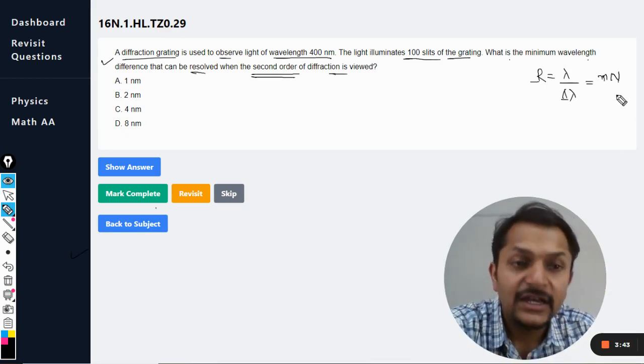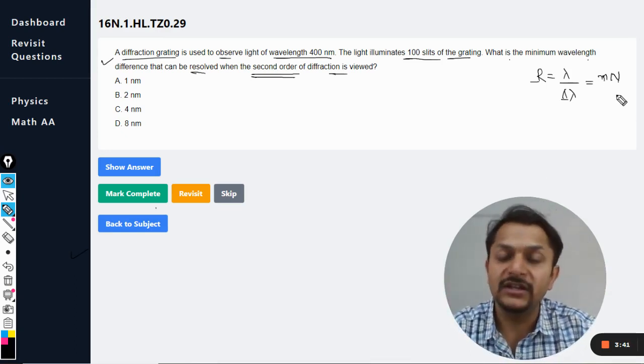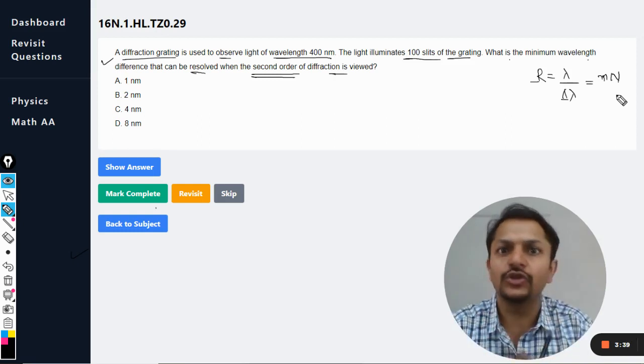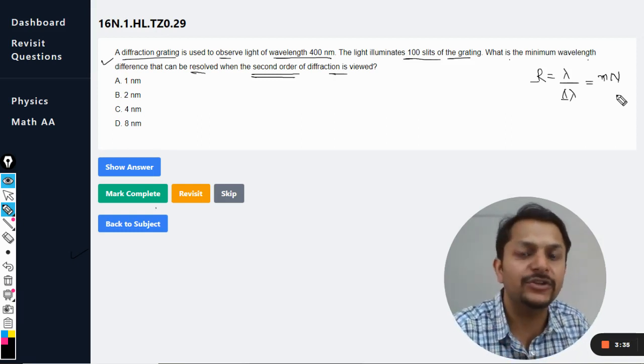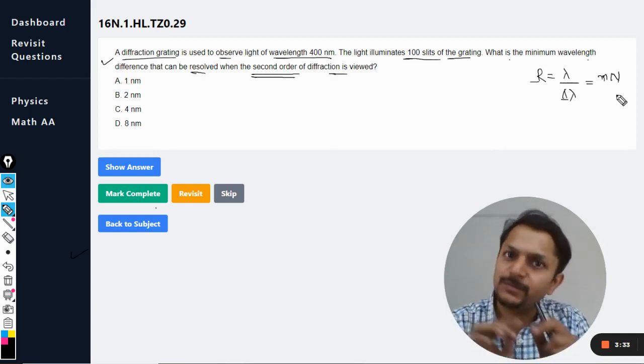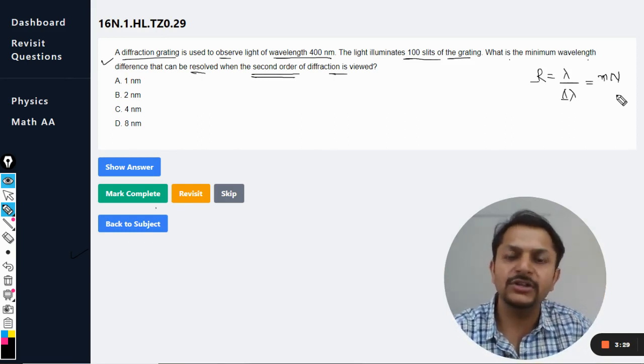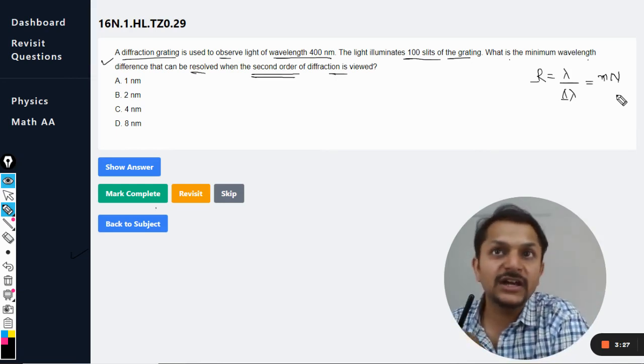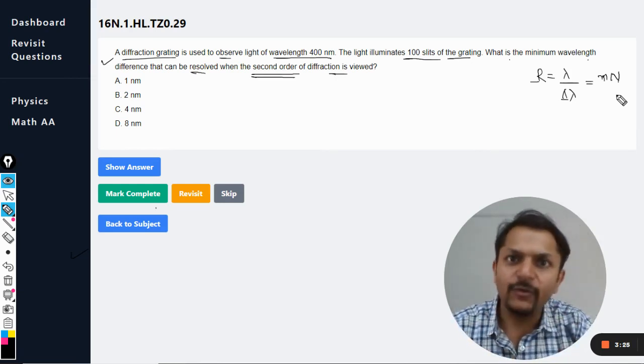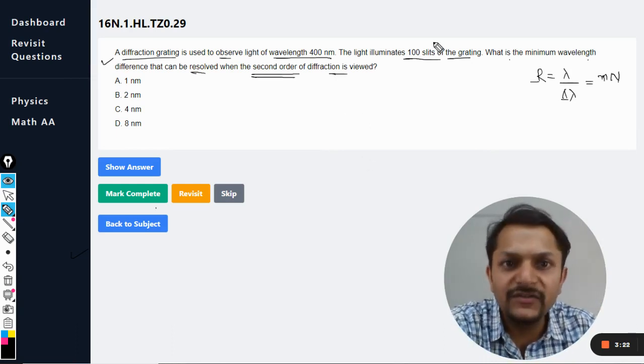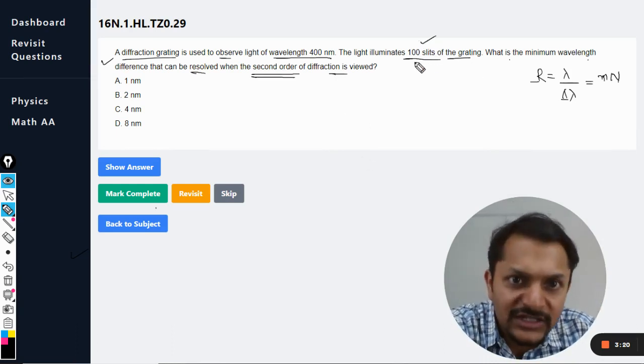N is number of slits which are illuminated, and N is an absolute number, total number. So it is not like 600 slits per millimeter. No, it is 600 slits per millimeter multiplied by the total length, which is 20 millimeters, so it is 12,000 total number. Likewise, you have to find the total number of slits. So it is given here that there are just 100, so this is capital N.